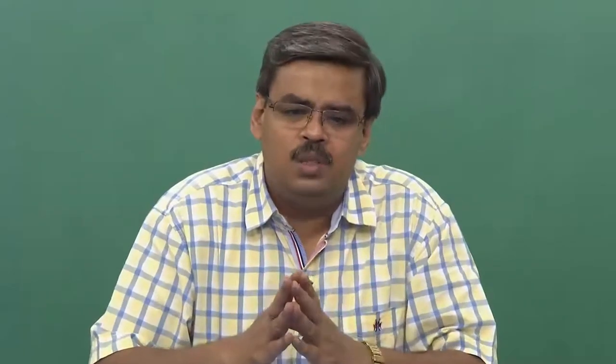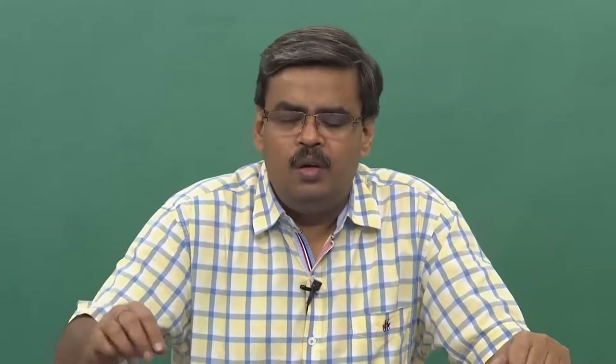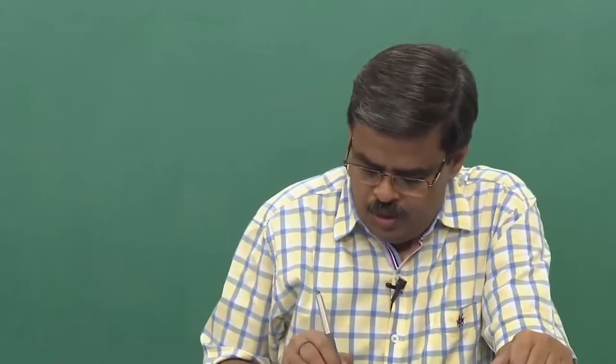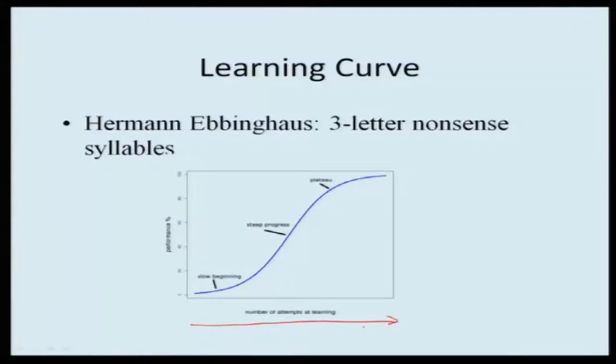Ebbinghaus created a set of nonsense syllables with three letters and wanted to understand the rate of learning — how many attempts it takes and what the success rate is. He plotted a curve: on the x-axis, the number of trials; on the y-axis, the percentage of recall of nonsense syllables. What he realized was very interesting — this is called the learning curve.